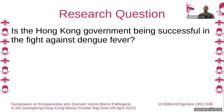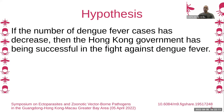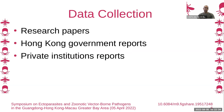That's a very common case of mosquito-borne disease. Our PhD student has a research question: is the Hong Kong government being successful in fighting against dengue fever? To answer this, the hypothesis is: if the number of dengue fever cases has decreased, then the Hong Kong government has been successful. To answer this hypothesis, the student will need to collect data on dengue fever cases in Hong Kong — which can come from three major sources: research papers, Hong Kong government reports, and private institution reports.